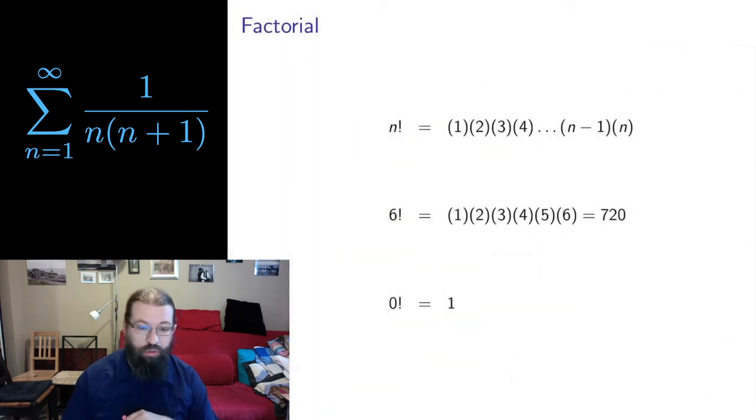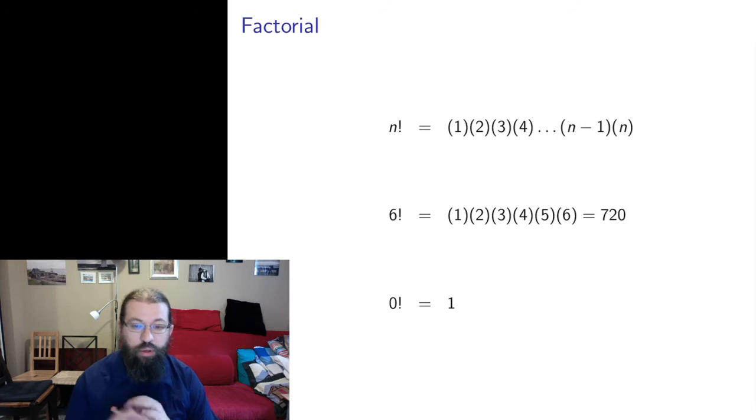One last example. Before I do that, I want to introduce the notion of the factorial. Probably familiar to you, but just in case it isn't, I want to make sure that we remind ourselves what a factorial is. A factorial of a positive whole number is all numbers up to that point multiplied together. n factorial is 1 times 2 times 3 times 4 times 5, all the way up to n. As an example, 6 factorial is the product of all the numbers up to 6. And factorials grow very, very quickly. 6 factorial is already 720. So the factorials get very large very quickly.